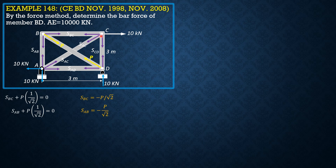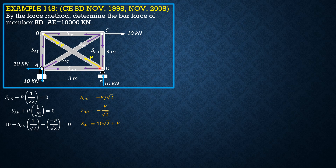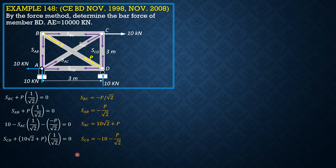We proceed to joint C. Summation forces X: 10 minus S_AC times 1/√2 minus S_BC (which is −P/√2) equals 0, so S_AC = 10√2 + P. Then summation forces Y = 0 (downward positive): S_CD plus the vertical component of S_AC times 1/√2 equals 0, so S_CD = −10 − P/√2.